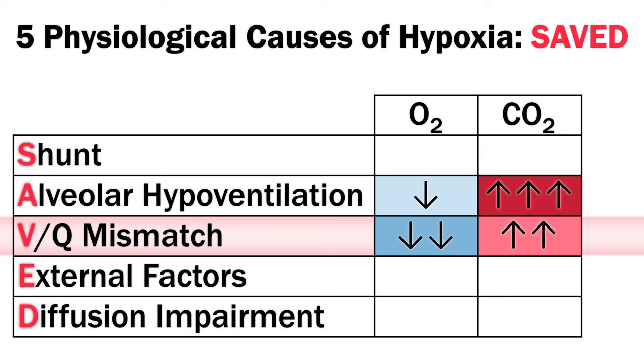To summarize, VQ mismatch will impair gas exchange for both oxygen and carbon dioxide, though the increased CO2 won't necessarily be evident as patients will often compensate through increased ventilation, and CO2 has a more linear pressure content relationship than oxygen. True functional shunt will profoundly impair oxygenation, and uniquely this will not significantly improve with supplemental oxygen. If patients are hypoxemic from shunt, their CO2 may even be low due to additional respiratory drive.